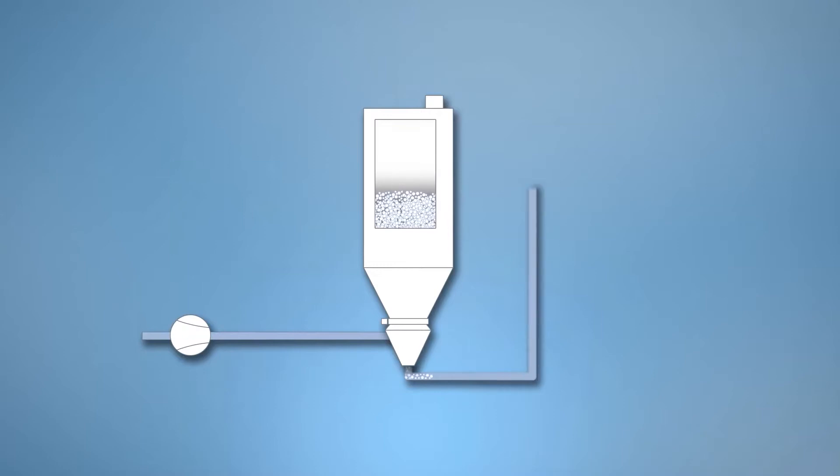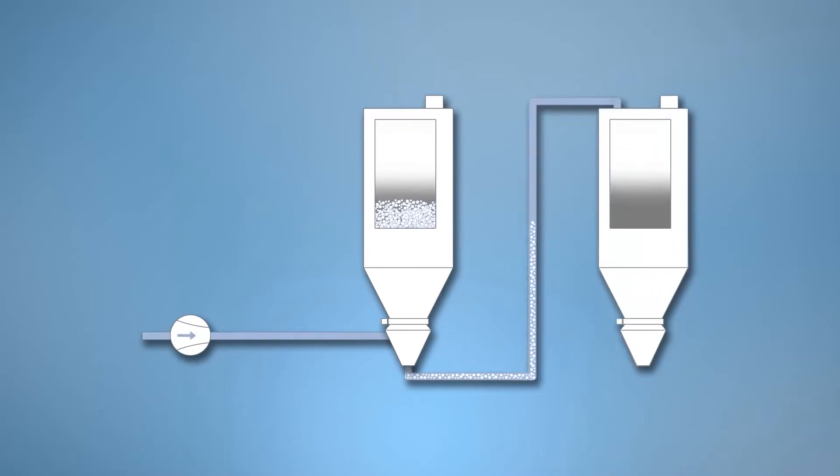Pneumatic conveying is a method to bring material from one silo to the other or from the storage tanks to the process. There are many industries using pneumatic conveying.